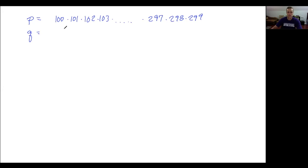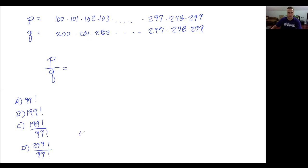And q is the same thing, so we're going to have 200 times 201 times 202, et cetera, all the way up to 297, 298 times 299. They end at the same place. The question is what is p over q, and we have those answer choices: A) 99 factorial, B) 199 factorial, C) 199 factorial over 99 factorial, D) 299 factorial over 99 factorial, and E) 299 factorial over 199 factorial.